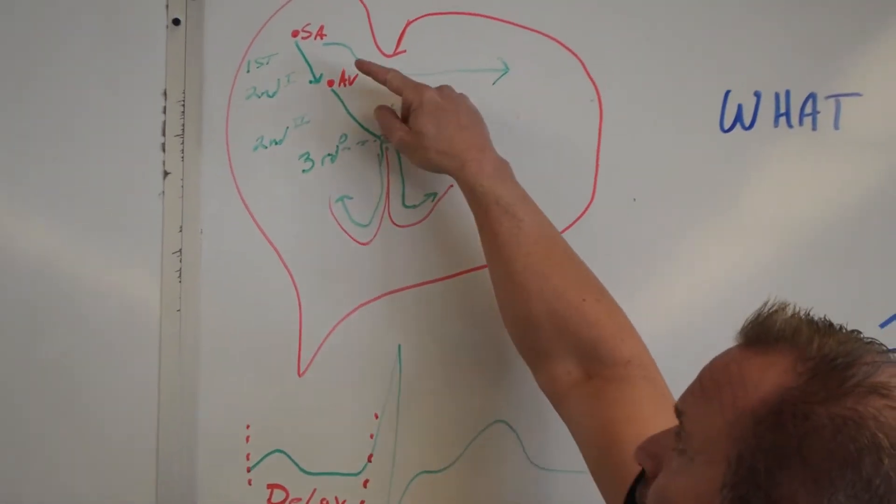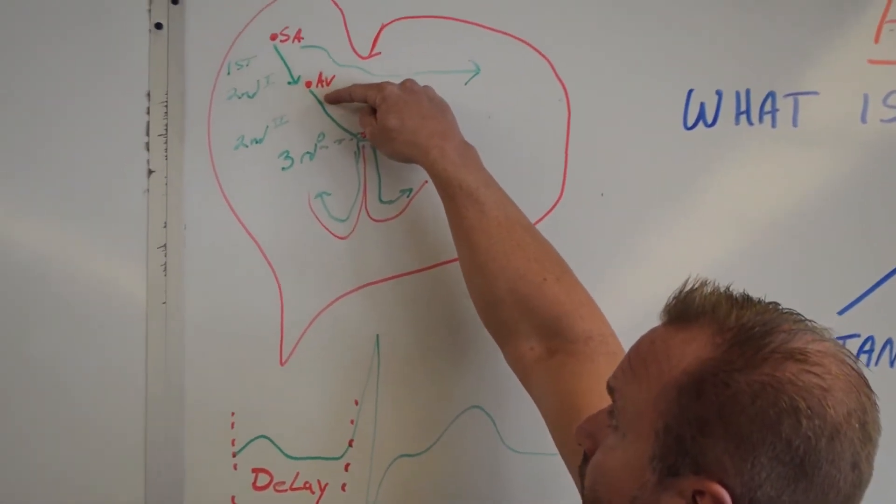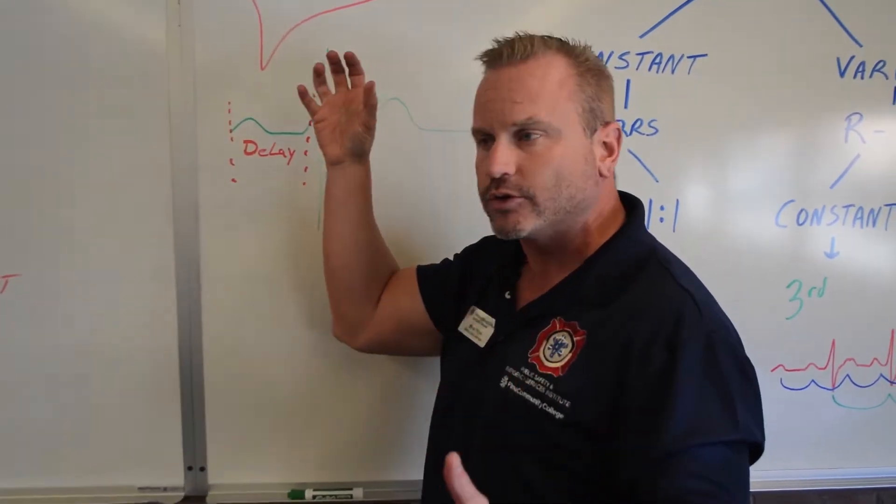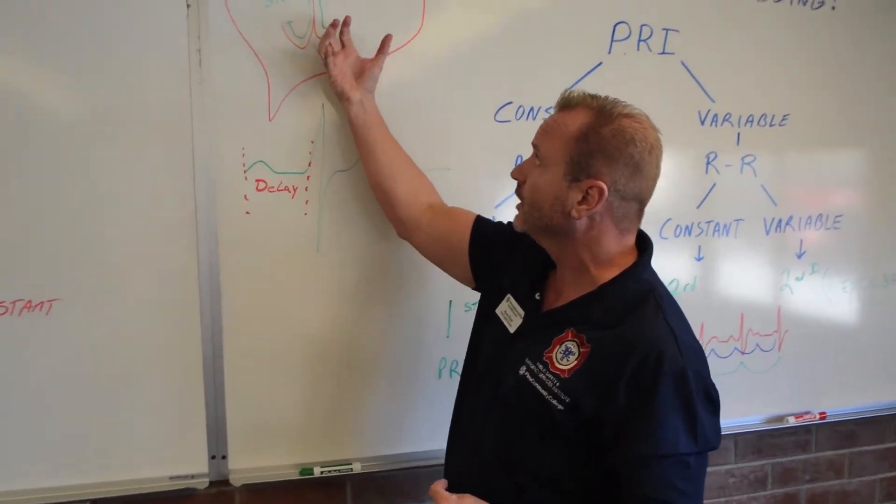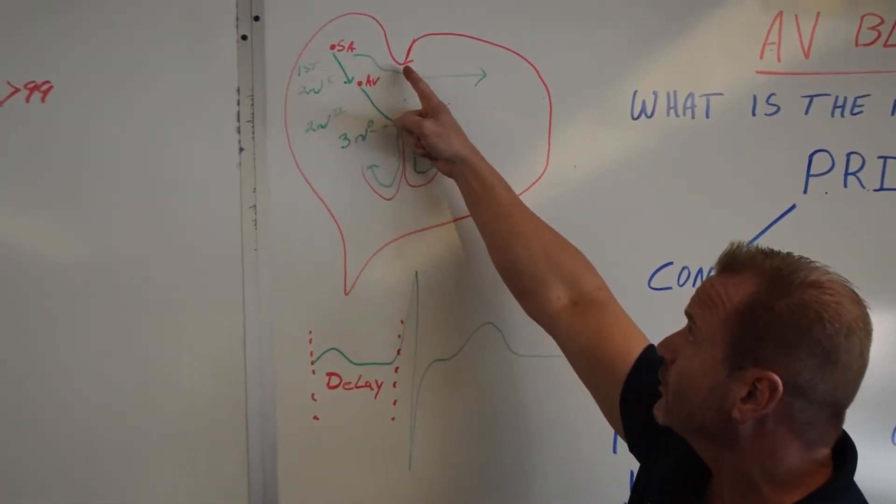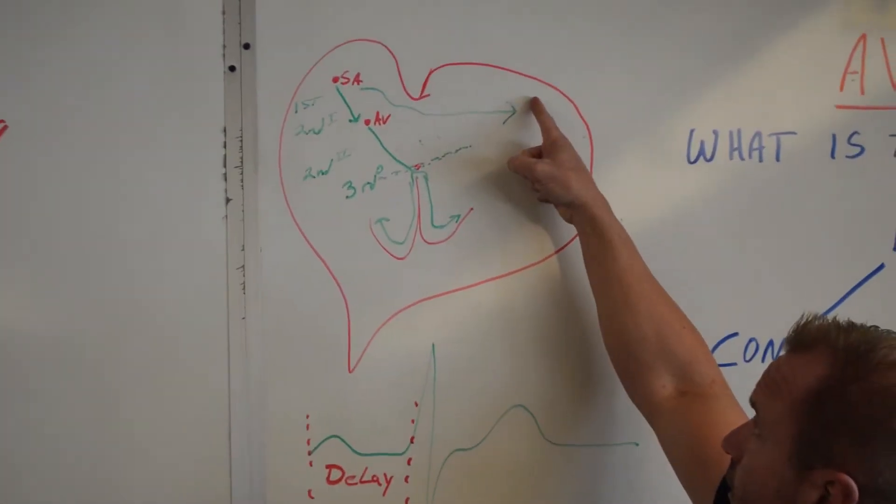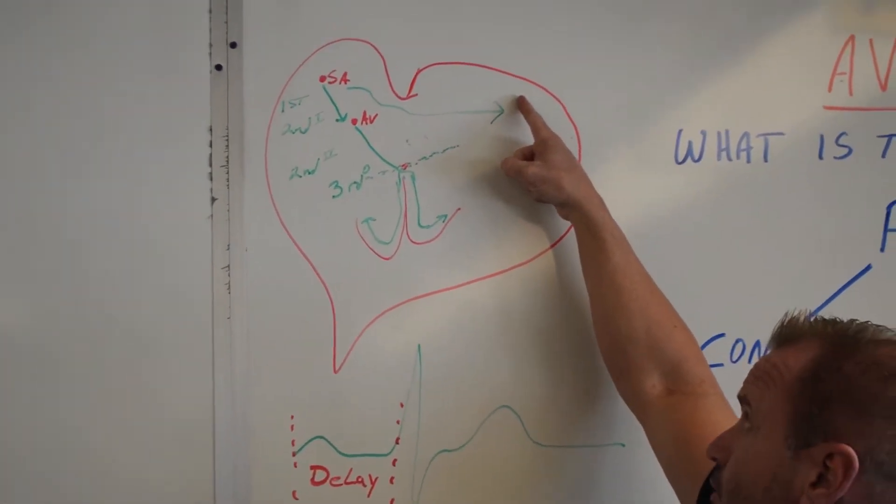In the normal pathway, the SA node fires electricity down the AV node. The AV node says, I like that electrical current. I'm going to send it on through the ventricles, and we'll get depolarization. Remember, the SA node also fires electricity over here, over to the left atrium as well.